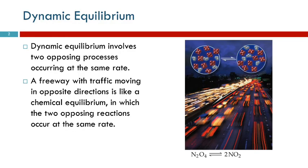You get this traffic going in opposite directions. And there's no net change of people moving from one side to the other if they're going at equal rates. But there's change. It's just happening in opposing directions. That's what a dynamic equilibrium is.